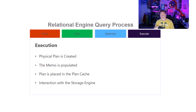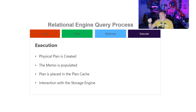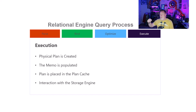When we get to execution, the physical plan is created, the memo is populated, the plan cache is also populated, and the interaction with the storage engine begins. This is very important to remember because when we're able to skip optimization, we can go directly to the plan cache, get the query, and execute. If you've ever run a query once in SQL Server and then run it a second time and went 'wow, that's a lot faster' — that's what happened. You went to the plan cache, skipped all of optimization, and executed the query immediately. Also, the logical data is no longer on disk — it's been loaded into memory, and memory is a lot faster than loading things from physical disk.